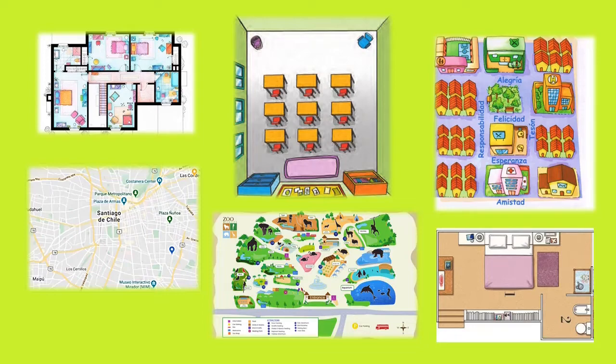Es muy importante que sepas que los planos tienen vista aérea. ¿Qué quiere decir esto? Que es como si los estuviéramos mirando desde arriba. Como si, por ejemplo, te subieras a un avión y observaras por la ventanilla. Si tú miras hacia abajo de esta ventanilla, así se ven los planos, como cuando vas arriba de un avión y puedes observar hacia abajo.